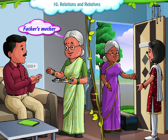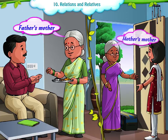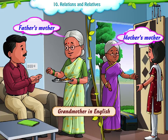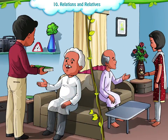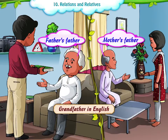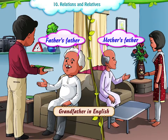Our father's mother and our mother's mother are called Grandmother in English and Adji in Marathi. The English name for our father's father and our mother's father is Grandfather and Adzoba in Marathi.